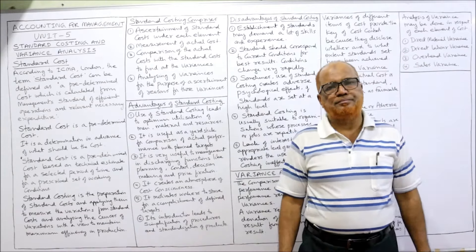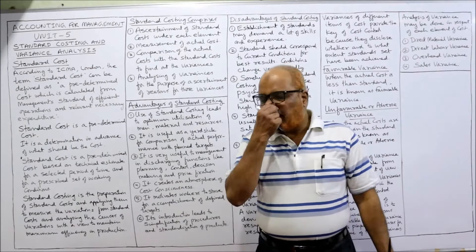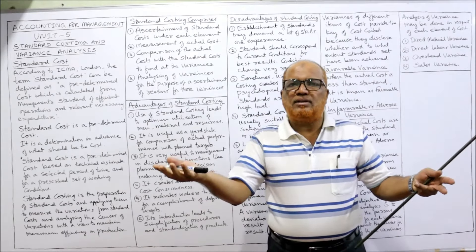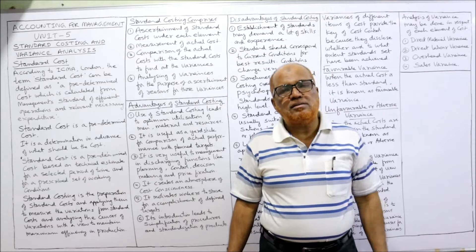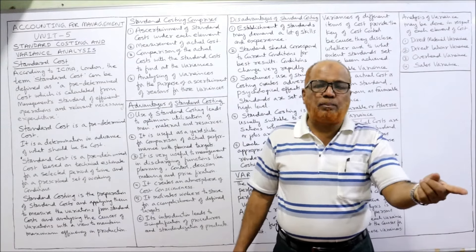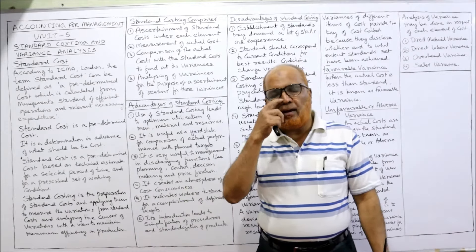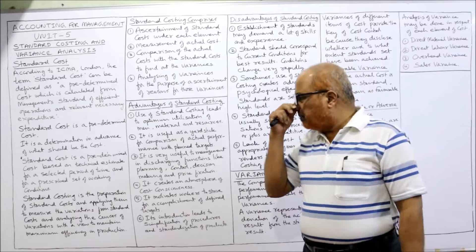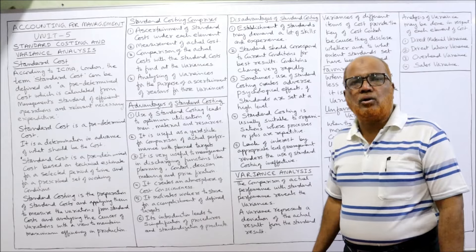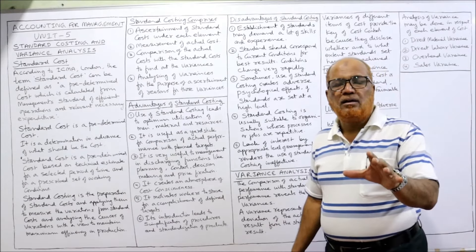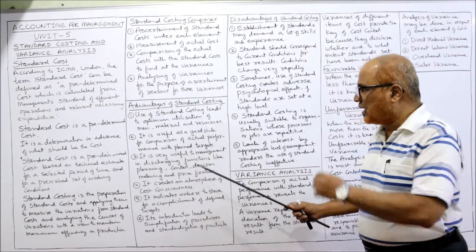Secondly, it is useful as a yardstick for comparison of actual performance with planned performance. The management's main job is planning, but planning without controlling is a wasteful activity. Simply making plans with no controlling makes them useless, and controlling without a plan is not possible. So both go simultaneously — planning and controlling. By making this standard costing, we can control the activities. It is a standard to compare how much we have planned and how much we are achieving.